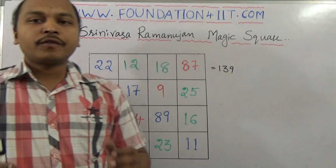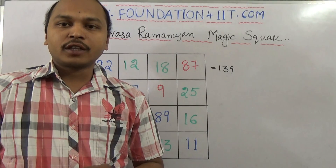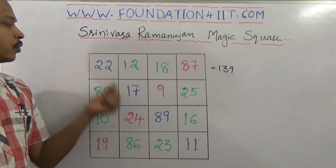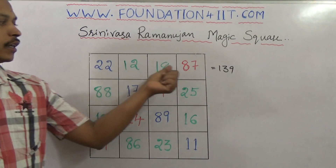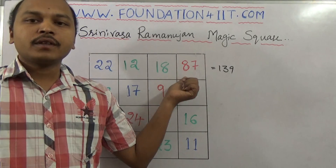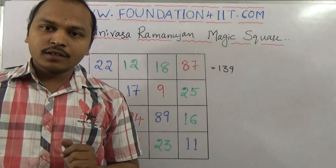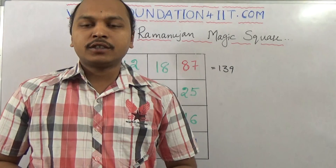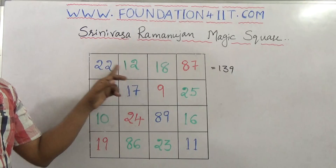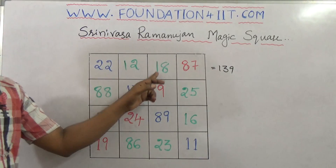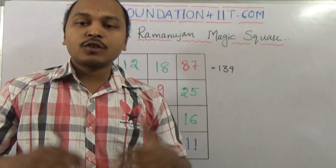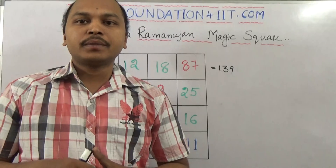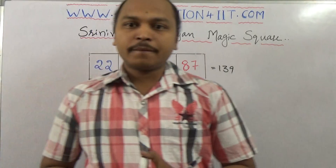The last but not the least — the best one in this. The top row: 22, 12, 18, 87. This is actually Srinivasa Ramanujan's date of birth — December 22nd, 1887. So on his date of birth, he made this simple magic square.